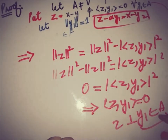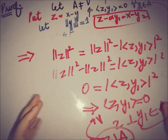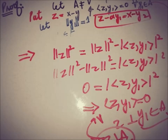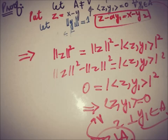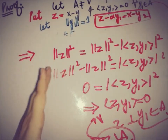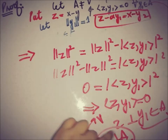Since y₁ was an arbitrary element of A, this holds for all elements of A. We have proved that z = x - y is a non-zero element of V that is perpendicular to the complete subspace A. This was shown using the minimizing vector theorem and properties of the inner product and norm. That concludes the theorem. Subscribe to the channel for more upcoming videos — take care, goodbye.